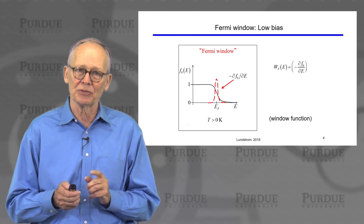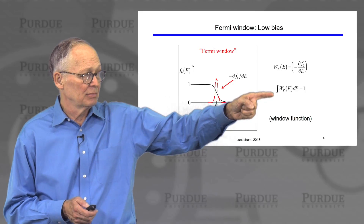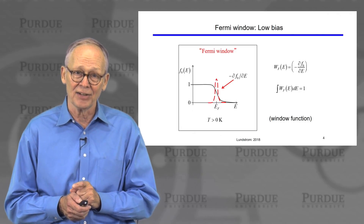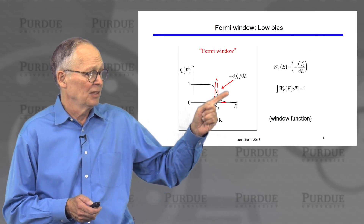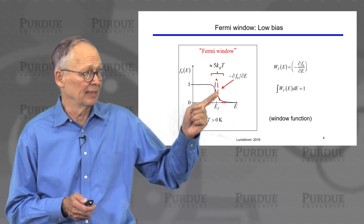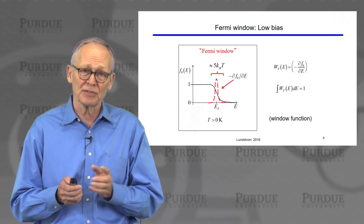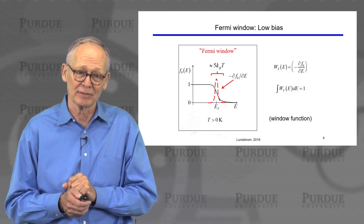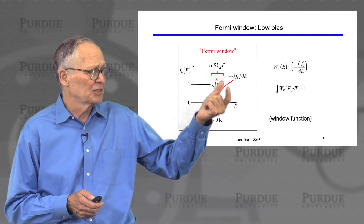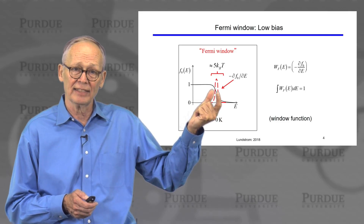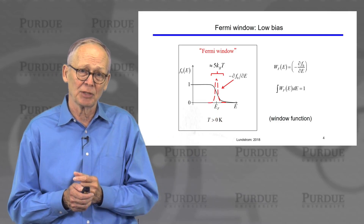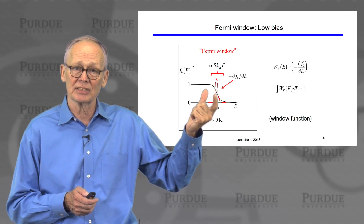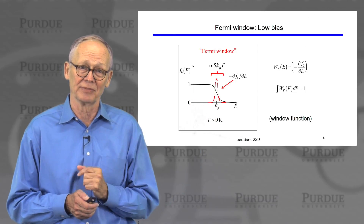It's easy to show that if you integrate this window function across all energies, the area under the function is 1. The width of that function — if you look at the expression for this derivative — is just a few kT. There's an e to the minus (E minus EF) over kT in the Fermi function and therefore in the Fermi window, so the spread is several kT. In many cases, this can be approximated as a delta function, which greatly simplifies the mathematics.